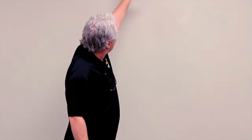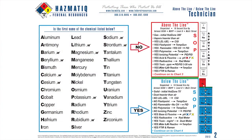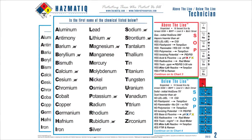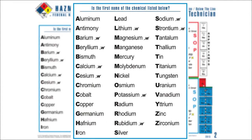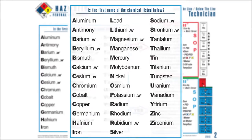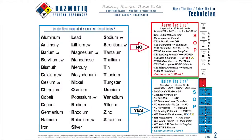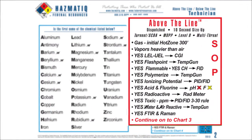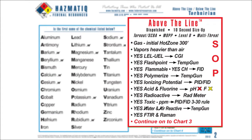We're going to go to chart number two. Chart number two — we always start with the alphabetical. We look down to the M's: is methyl there? No, no methyl. That takes you to the above-the-line size-up. The size-up is a prediction — it's not a fact, it's a prediction. So I'm predicting that methylamine is a gas.